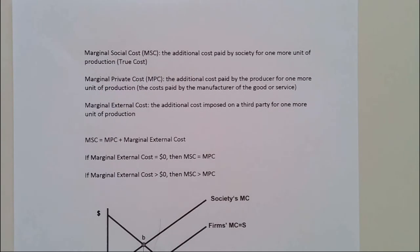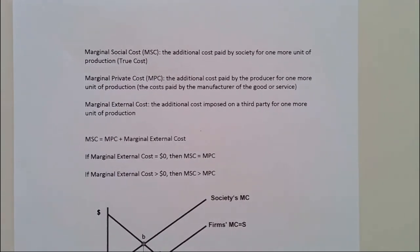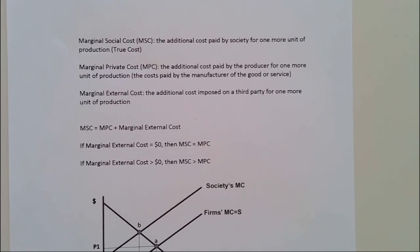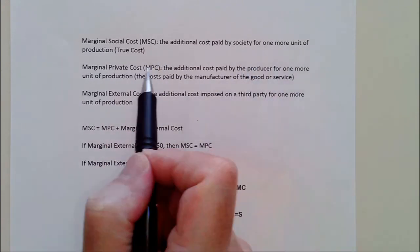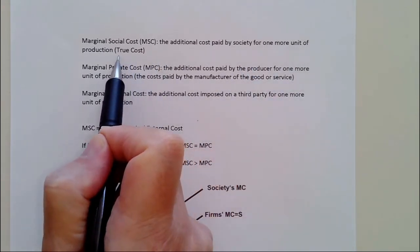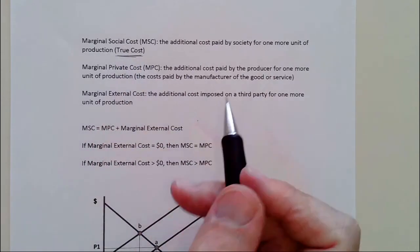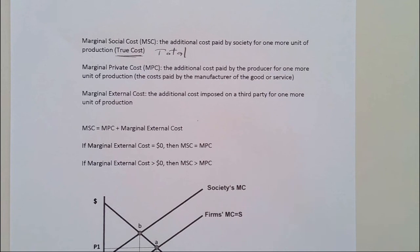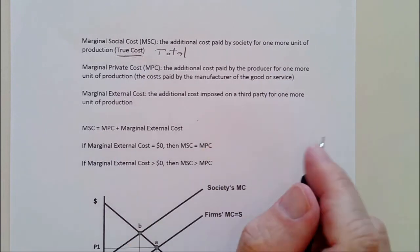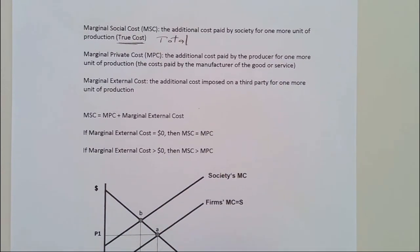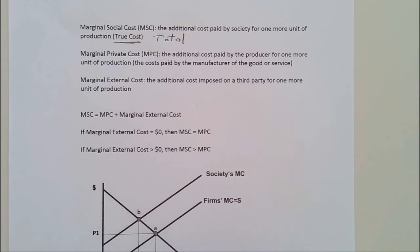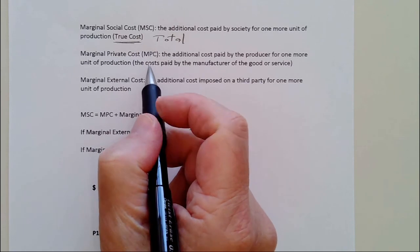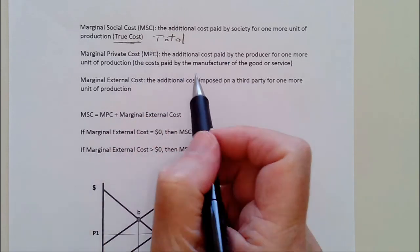Let's look at the model for negative externalities. We have to use a few concepts. First, we have marginal social cost — the additional cost paid by society for one more unit of production. I like to call this the true cost — the total cost of producing one more unit of output, whether that's a ream of paper or a ton of steel. Then we have marginal private cost, which is the regular marginal cost we've discussed for firms — the additional cost paid by the producer for one more unit of production. Up to now, marginal private cost and marginal social cost were the same thing.